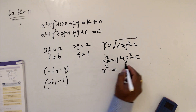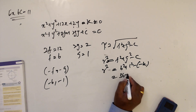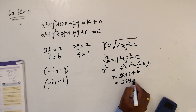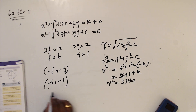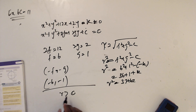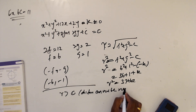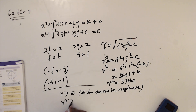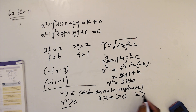r squared equals f squared plus g squared minus c, so 6 squared plus 1 squared plus k equals 36 plus 1 plus k equals 37 plus k. The argument is r greater than 0 because distance r squared cannot be negative, so r squared equals 37 plus k must be greater than 0, meaning k must be greater than minus 37.